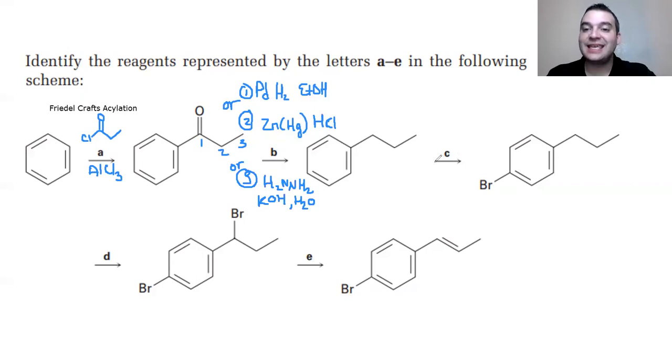For reagent C, this is going to be an electrophilic aromatic substitution reaction. Remember, whenever you have an alkane chain, this is an ortho-para director. Whenever you have an ortho-para director, you are going to get a combination of products. You will get the ortho product, and you will get the para product. Normally, under normal circumstances, you're going to get the para product as the major product here.